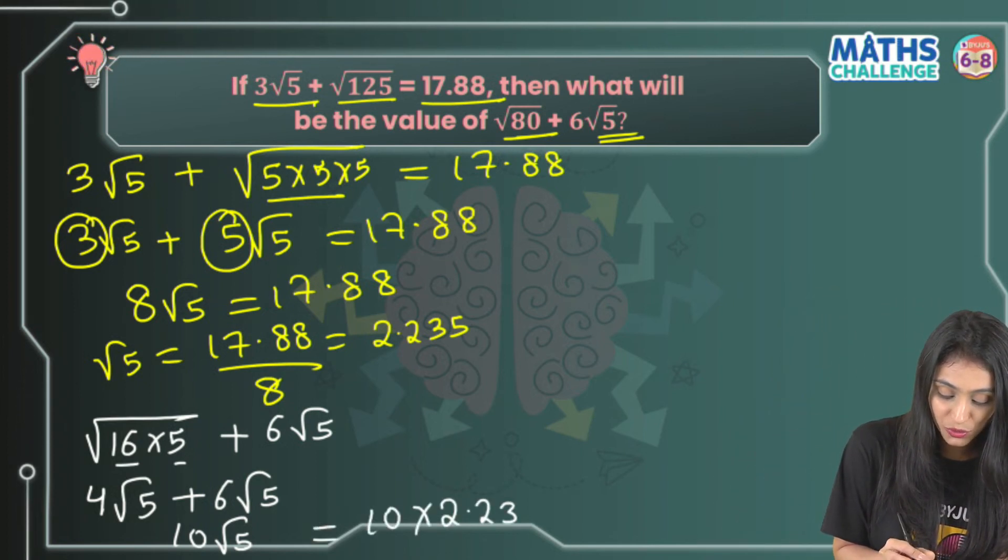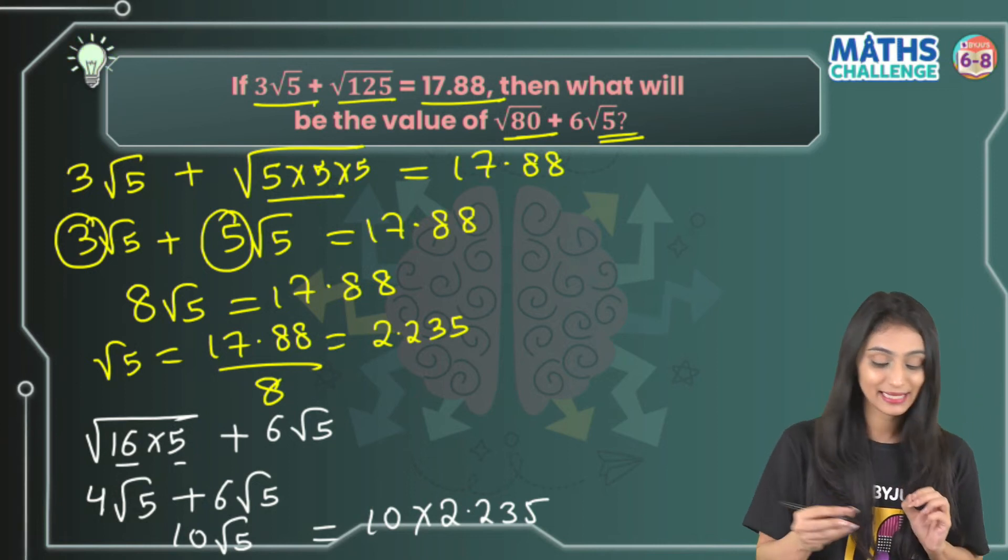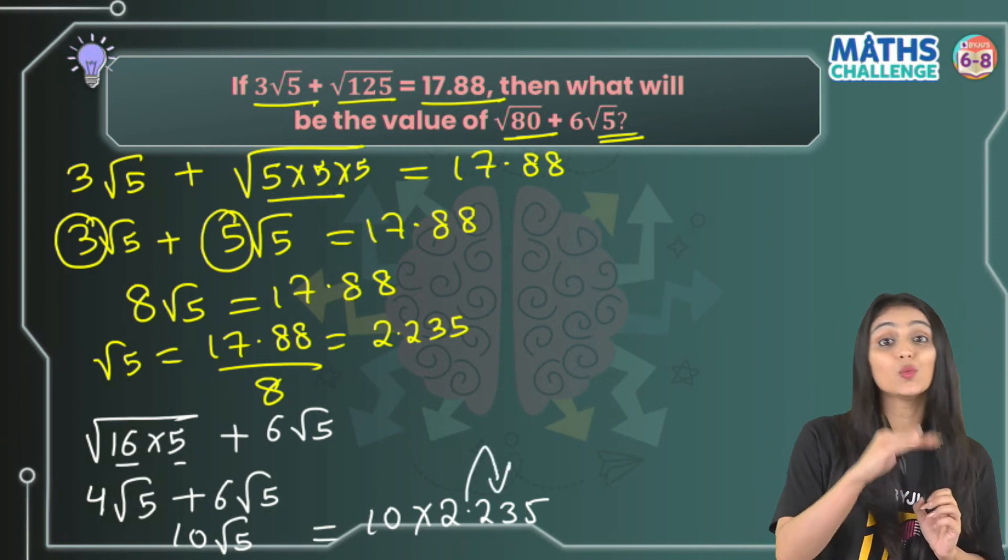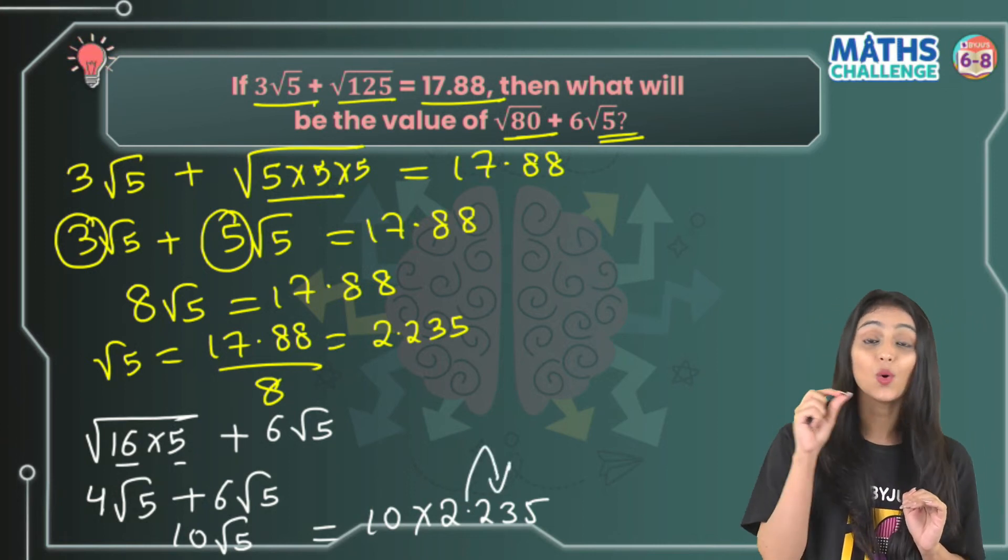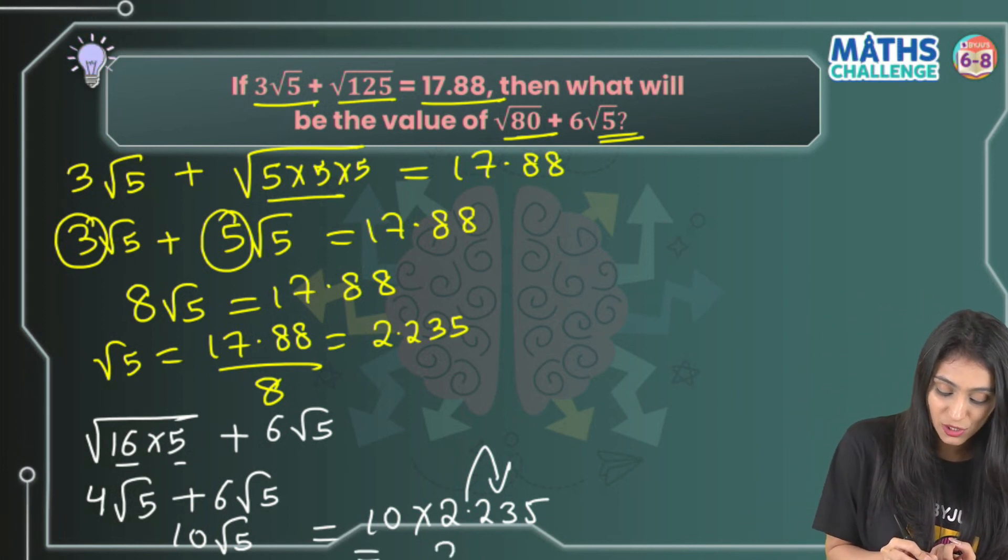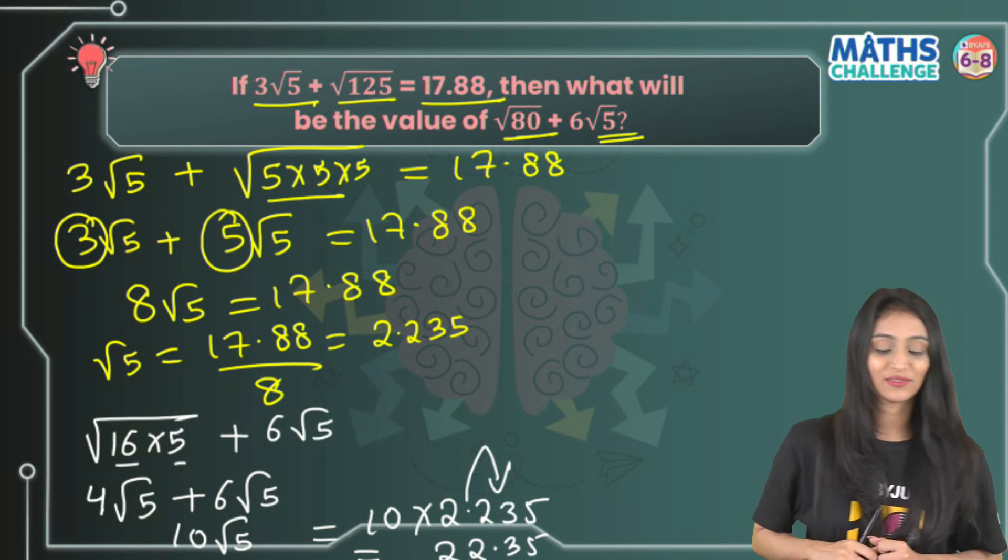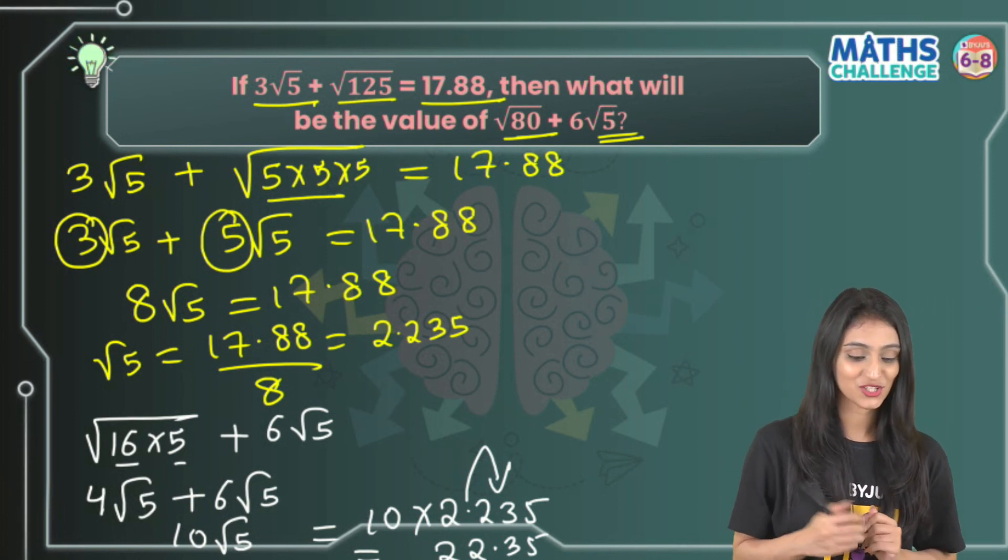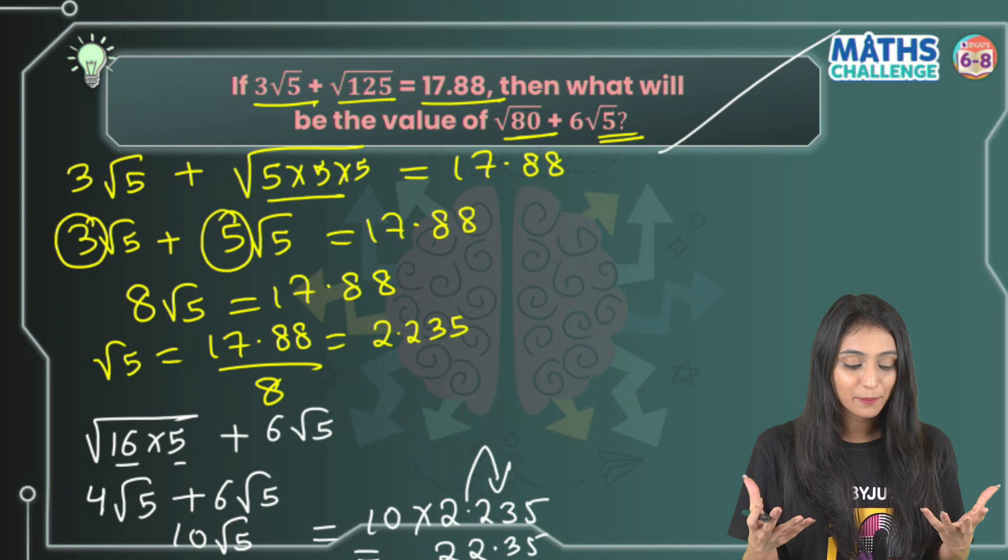Since we're multiplying with 10, we shift the decimal one place to the right. That gives us 22.35. That's the final result for this question. See, this question looks tricky because when we see square roots we get scared.